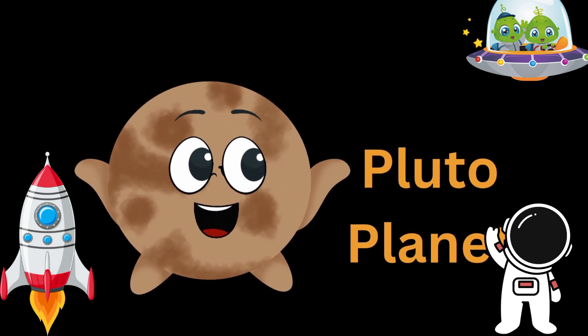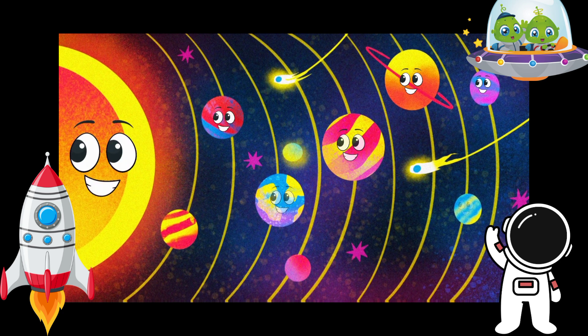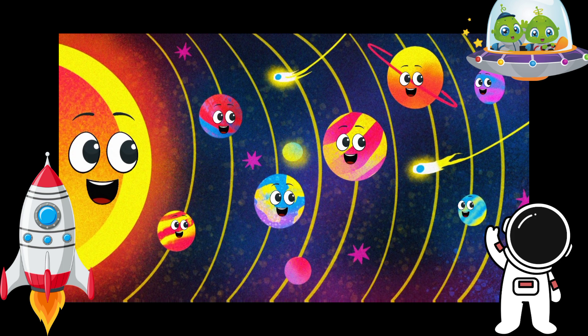Neptune is blue and far away, Pluto's a dwarf but here to stay. The moon is round, it lights the night, asteroids zip with a twinkling light